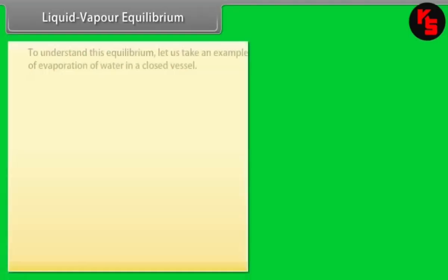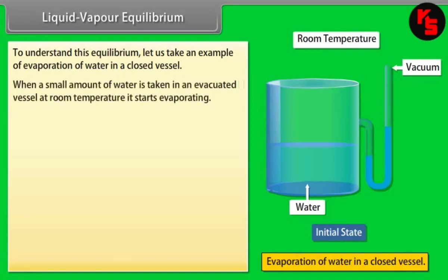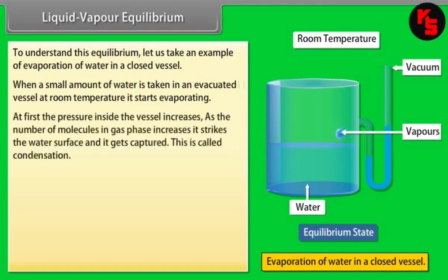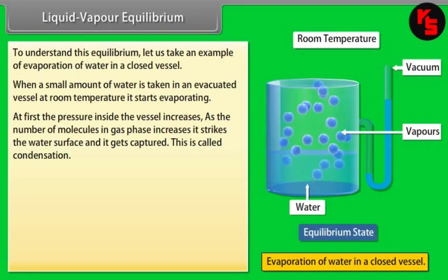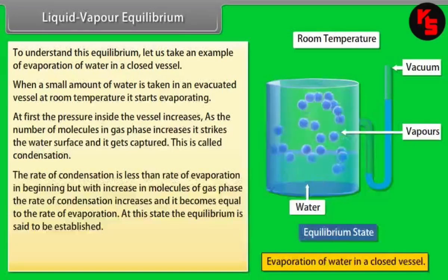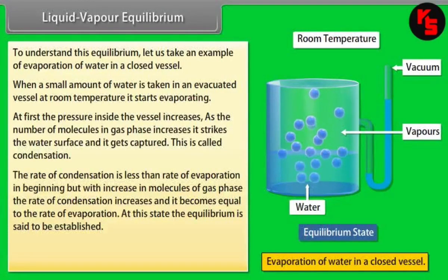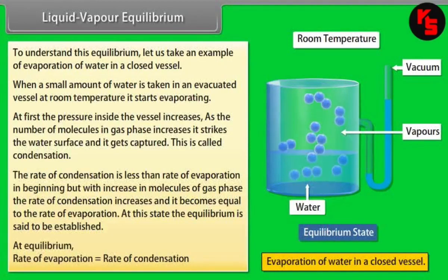Liquid-Vapor Equilibrium. When a small amount of water is taken in an evacuated vessel at room temperature, it starts evaporating and the pressure inside the vessel increases. As the number of molecules in the gas phase increases, they strike the water surface and get captured — this is called condensation. Initially the rate of condensation is less than the rate of evaporation, but with increasing gas-phase molecules the rate of condensation increases until it equals the rate of evaporation. At this state, equilibrium is said to be established.